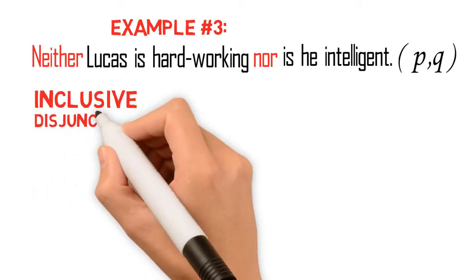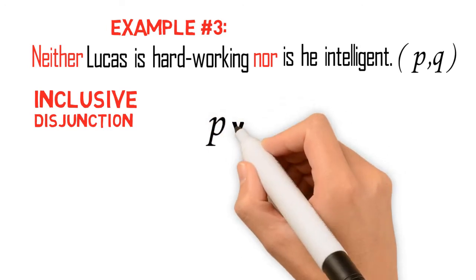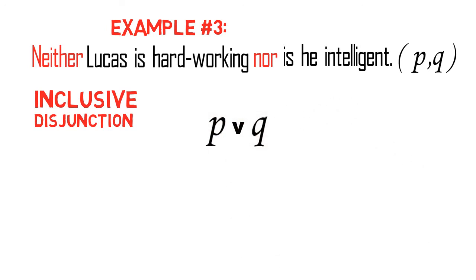This example is obviously an inclusive disjunction. Hence, we may initially symbolize the proposition as P or Q. However, the words neither nor is a signifier of a negation, and these words suggest that the entire proposition is negated.